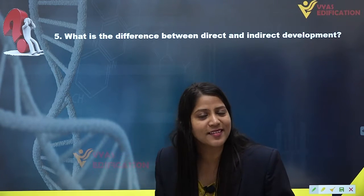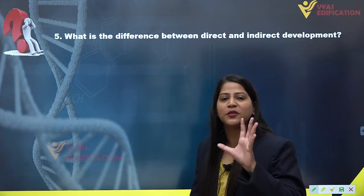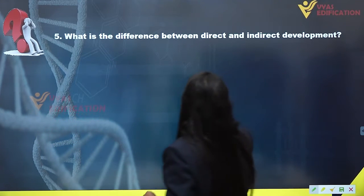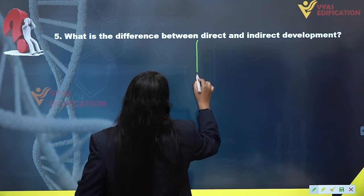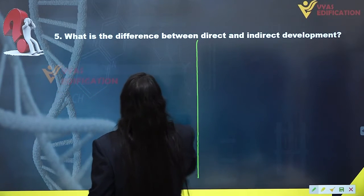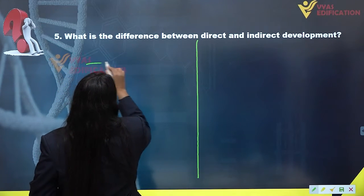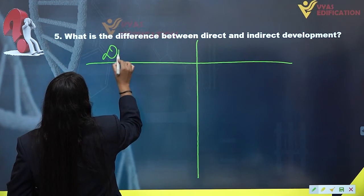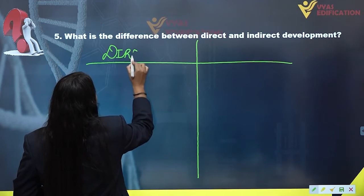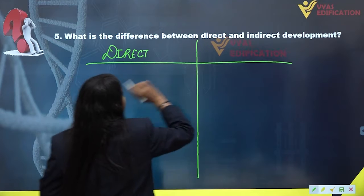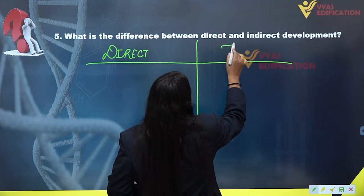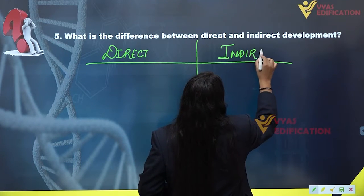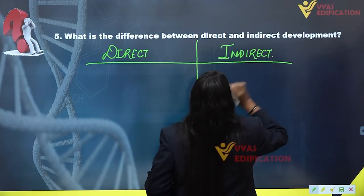Now we are going to write the differences between direct and indirect development. In the left column we are going to talk about direct development, and in the right column we are going to talk about indirect development.